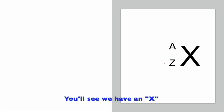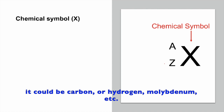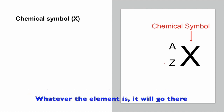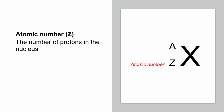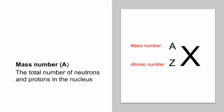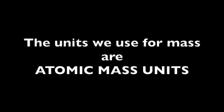Here is how it works. So let's take a look at this picture. You'll see we have an X — that big letter is the chemical symbol. It could be carbon, hydrogen, or molybdenum — whatever the element is, it'll go there. That little Z in the lower corner is going to be the atomic number, which is the number of protons in the nucleus of the atom. Up on the top left, that's the mass number — the total number of neutrons and protons in the nucleus, because adding protons and neutrons gives us approximately the mass of the atom. The units we use for mass are atomic mass units, which we'll get into in a future video.